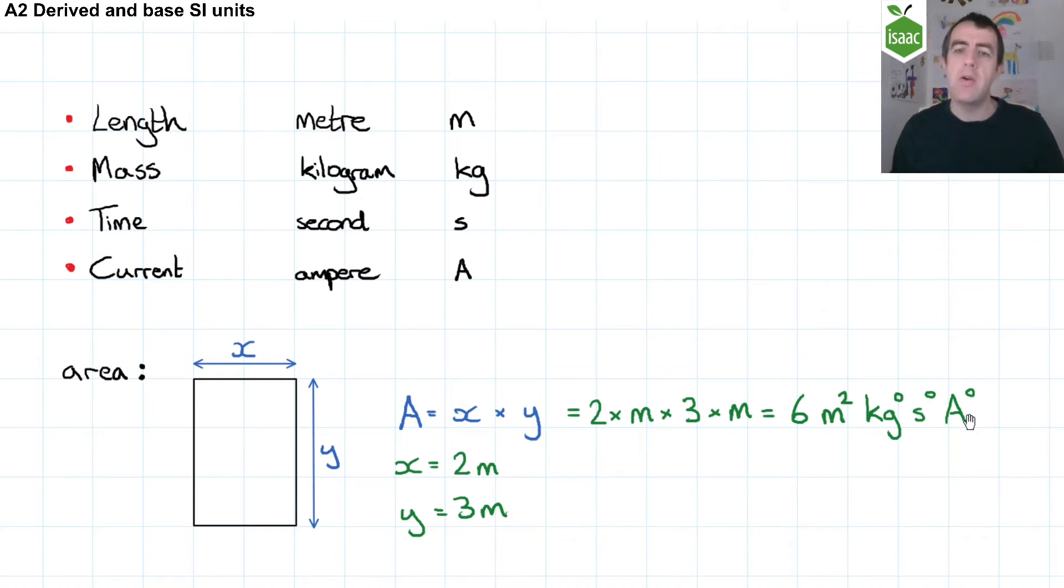Remember, anything raised to a power of zero is just equal to one. Now, any quantity can be expressed with a unit that is a string of the seven base units and some power. Each of the units has a power and those that we're not interested in have a power of zero.